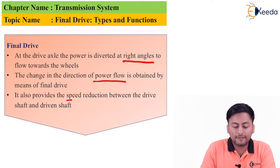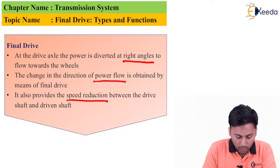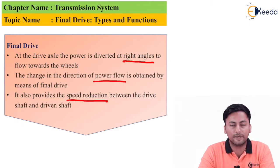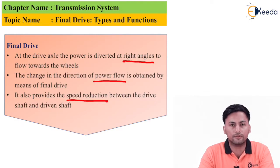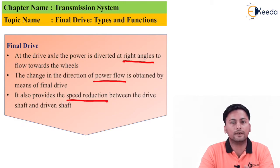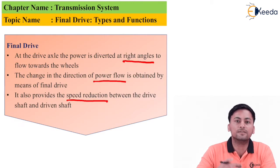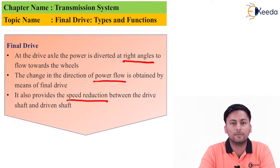The final drive also provides speed reduction. The speed reduction between the drive shaft and the driven shaft is one of its important features. When talking about speed variation, the gearbox is also a very important component. Inside the gearbox, we have different linkages which are responsible for changing the speed as well as the torque ratio. This is one of the important features of our final drive.